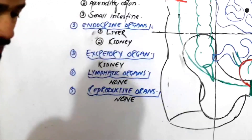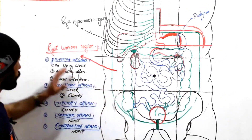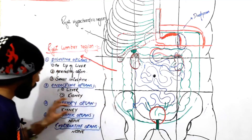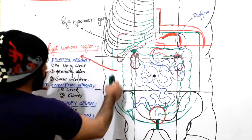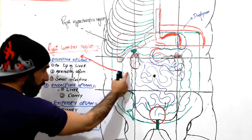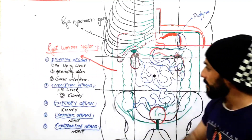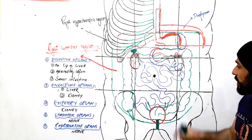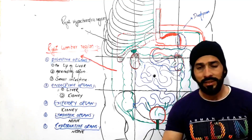For easy understanding, I have divided the organs present in different abdominal regions by their function. In the right lumbar region: digestive organs are the liver tip, ascending colon, and jejunum; endocrine organs are parts of the liver and kidney; excretory organ is the kidney; no lymphatic organ is found; and no reproductive organ is found. This was the description of organs in the right lumbar region. See you in the next lecture about the left lumbar region — Allah Hafiz.